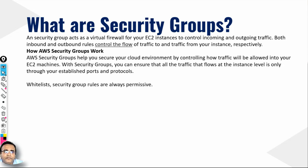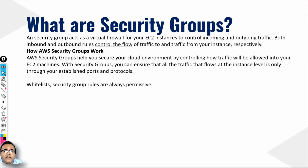One of the main defense mechanisms a cloud provider provides is a security group. A security group acts as a virtual firewall for your instances to control incoming and outgoing traffic — both inbound and outbound rules control the flow of traffic. Think of it like a security guard at the gate of an office or college, checking your identity and only allowing you inside when you pass. Even as an employee, you may not be allowed to access a particular building or floor — that is what the rule set is.